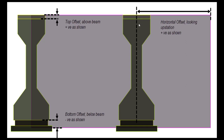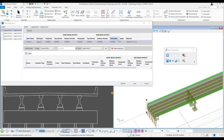The horizontal offset is from the centerline of the right beam to the end of the diaphragm, and this is positive when looking up-station — that means from station 1 to station 2. So if the diaphragm is on the left, that would be negative. We also have the angle, which is the skew angle of the diaphragm we want to model.